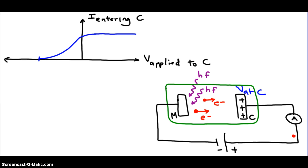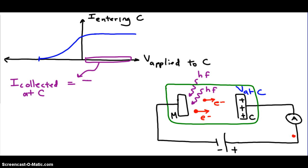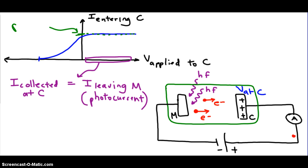When we apply a positive voltage to the collector plate, we measure all of the ejected electrons, meaning the current measured at the collector plate C is equal to the current leaving the metal plate M. The current that leaves the metal plate M has a special name — that is the photocurrent. So if you want to know the value of the photocurrent, you just look at the right half of the graph and trace back the line to the y-axis. That value tells you the photocurrent ejected from the metal plate M.